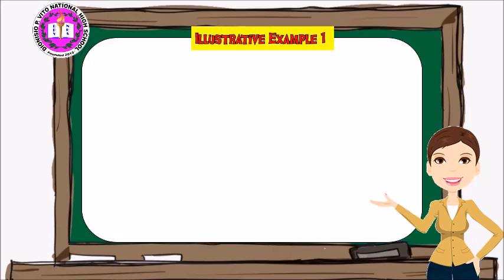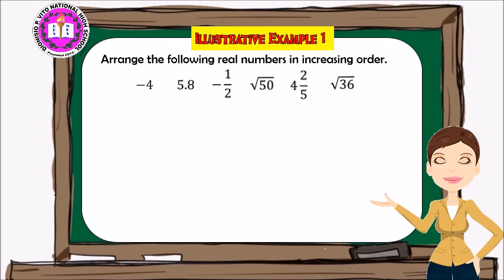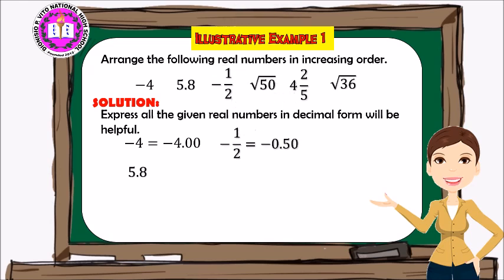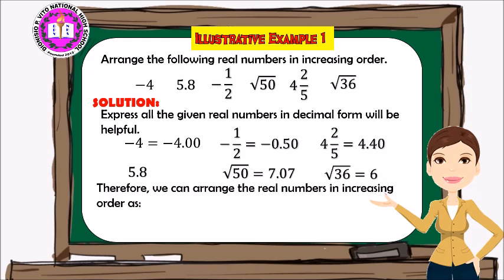Let's have Illustrative Example Number One: arrange the following real numbers in increasing order. Solution: express all given real numbers in decimal form. Negative four equals negative 4.0, 5.8, negative one-half equals negative 0.50, the square root of 50 equals approximately 7.07, four and two-fifths equals 4.40, and the square root of 36 equals 6. Therefore, arranged in increasing order: negative four, negative one-half, four and two-fifths, 5.8, square root of 36, and square root of 50.